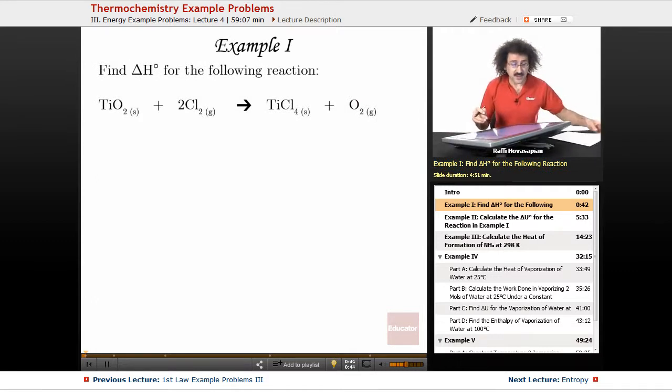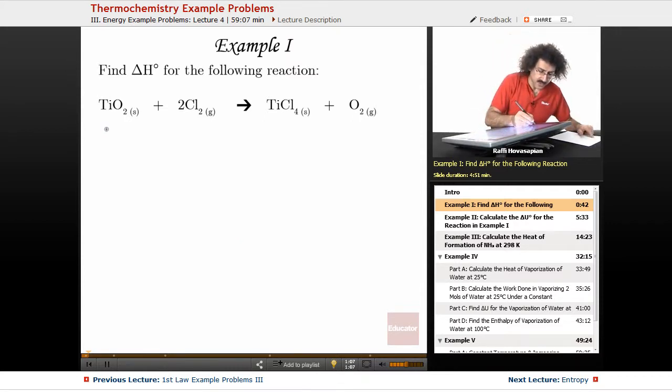Okay, so this one is nice and easy. It says find delta H for the following reaction: TiO2 solid plus 2Cl2 gas goes to TiCl4 solid and O2 gas. So notice we have solid, gas, solid, gas. Finding the delta H for the reaction is really simple. Again, we know this from general chemistry.